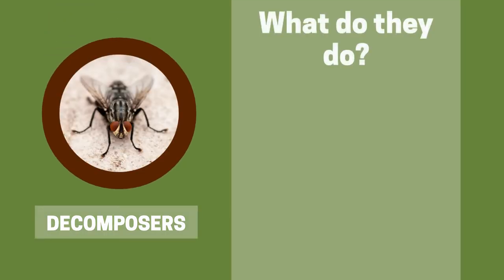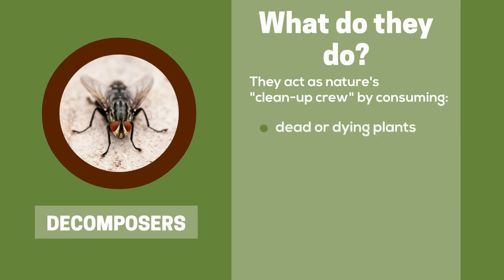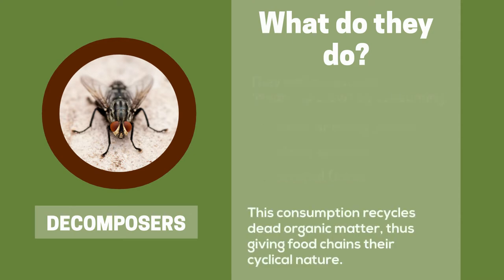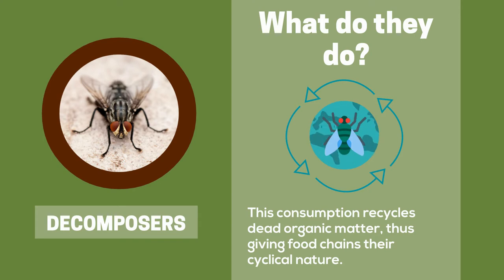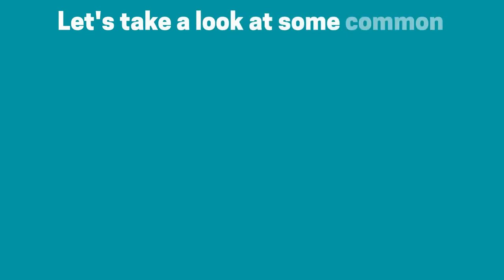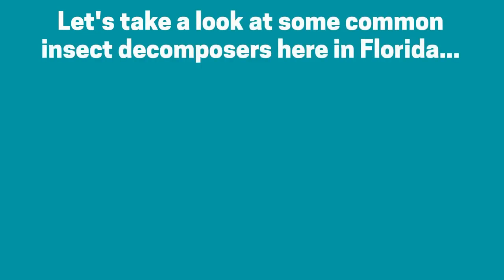These organisms act as nature's cleanup crew by consuming dead or dying plants, dead animals, and animal feces. This consumption takes the dead matter and waste left behind from every food web and recycles it into nutrients that can be used again. This step that many insects are a part of is what makes food webs a cycle.